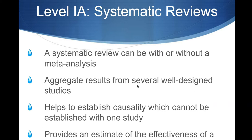There are two kinds of level 1 articles. The first kind is a systematic review. A systematic review can be with or without a meta-analysis. A meta-analysis is where you get results from several well-designed studies, sort of pull them all together as if it's one giant study, and then reanalyze them. You can do a meta-analysis, but you don't have to.